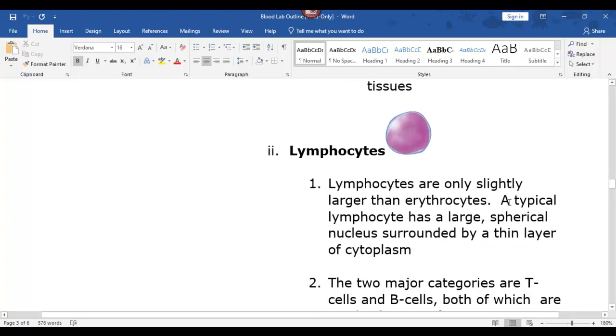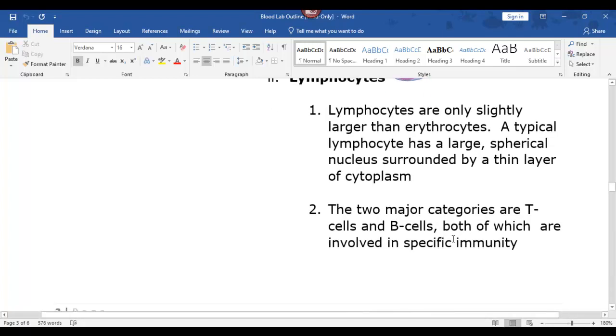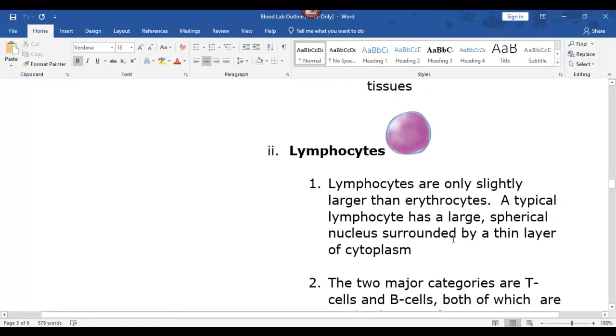All right, lymphocytes. Now we're going to cover a whole section on this in the lymphatic system. They have a little bitty ring of kind of whitish cytoplasm and a big purple nucleus. And they're, oddly enough, these are really talked about a lot now with this whole coronavirus outbreak. They're involved with what's called specific immunity.